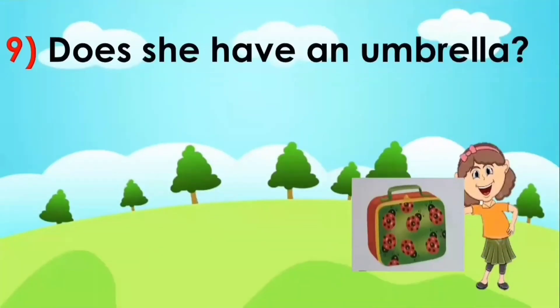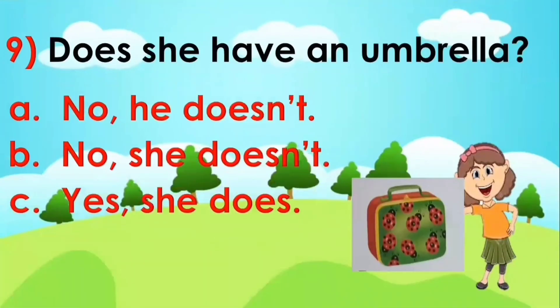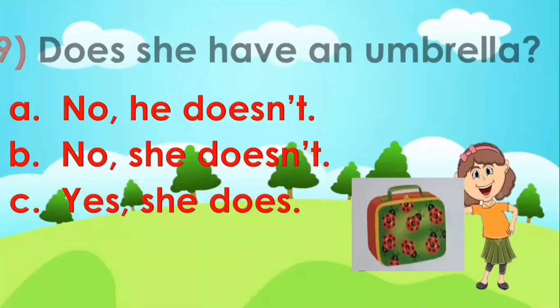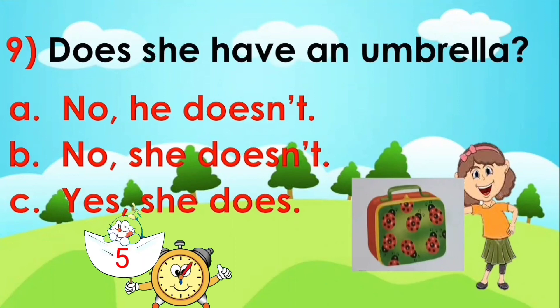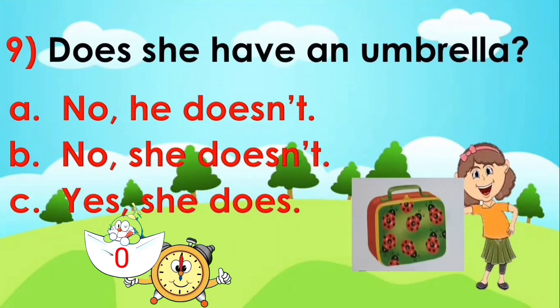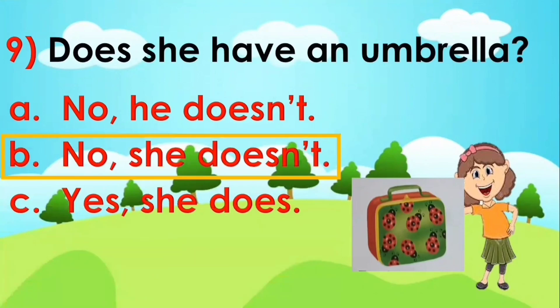Next, does she have an umbrella? A: no, he doesn't. B: no, she doesn't. C: yes, she does. Your time starts now. Time is off. The answer is letter B.